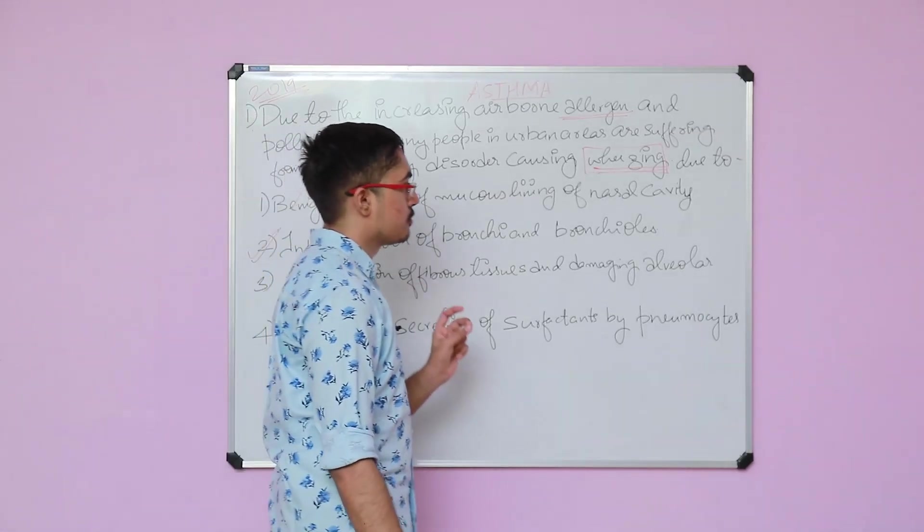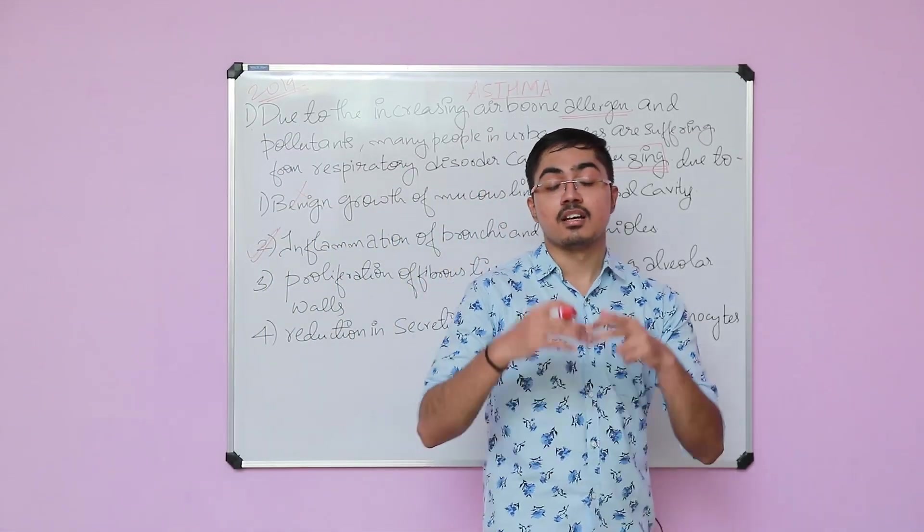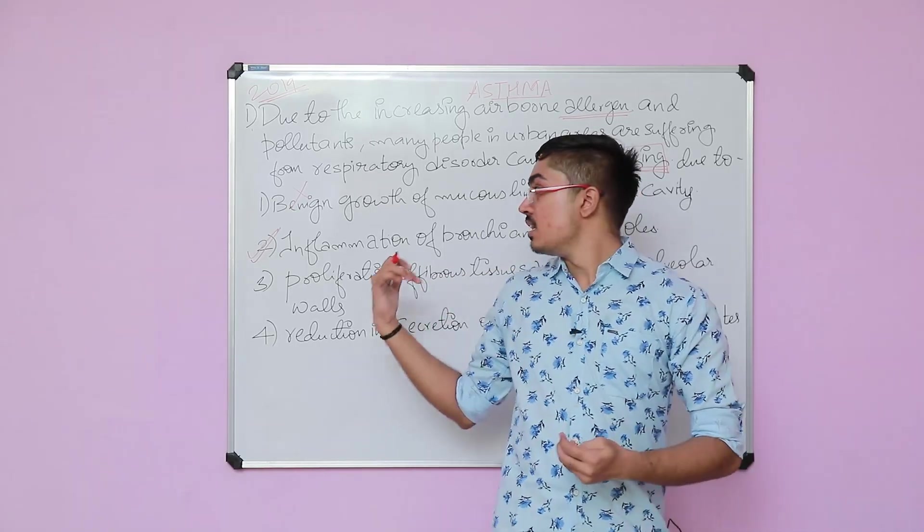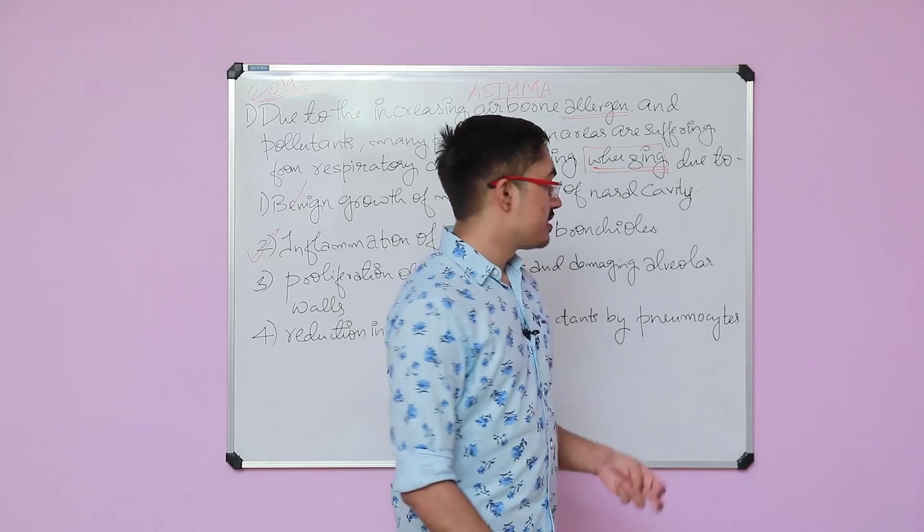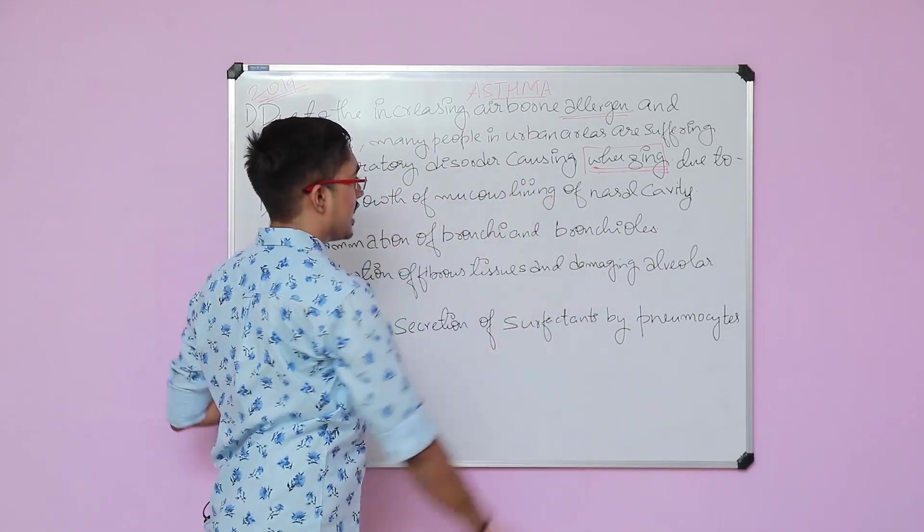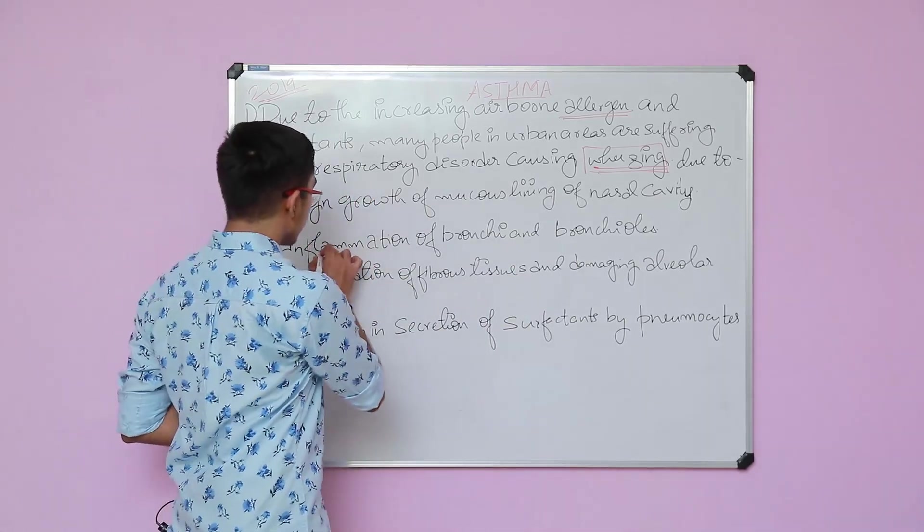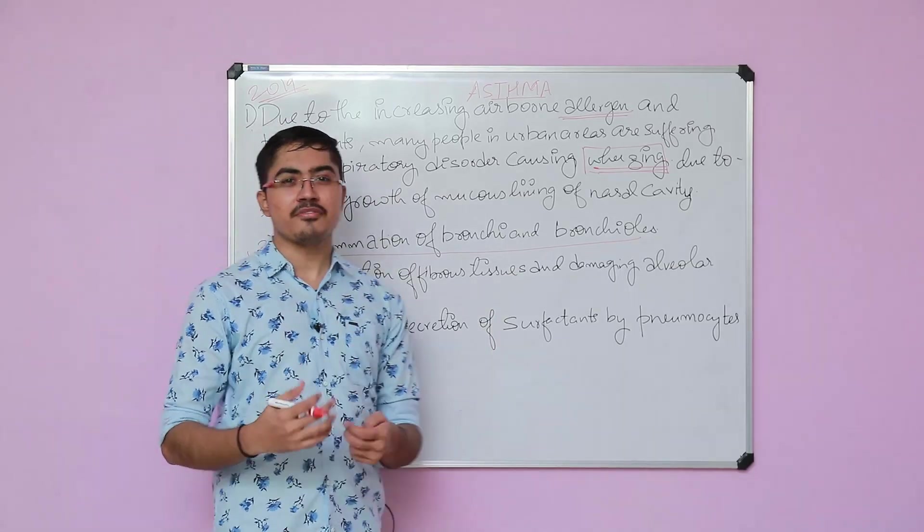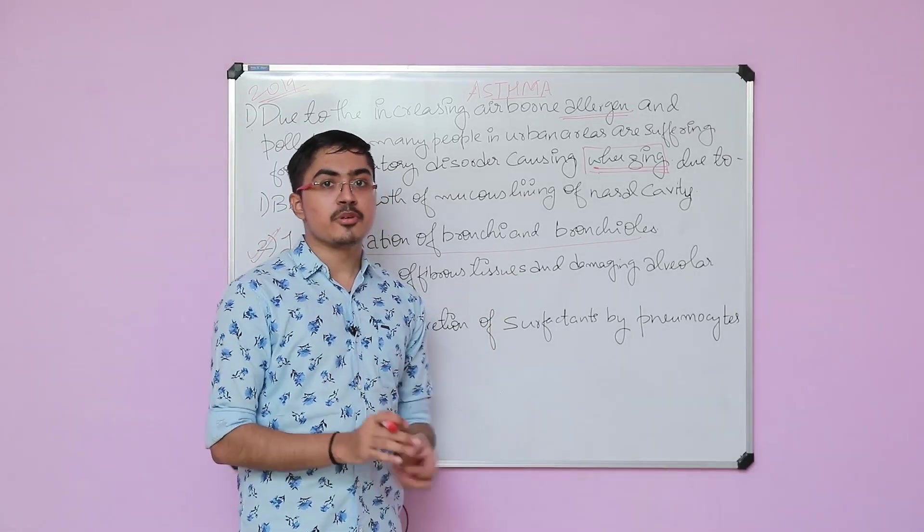It is very directly given in the textbook at the area where they have discussed all diseases pertaining to respiratory system. It is a direct straightforward derivative from the NCERT. They have directly taken the sentence and presented it as the question. Inflammation of bronchi and bronchioles happens because of an IgE mediated immune response.